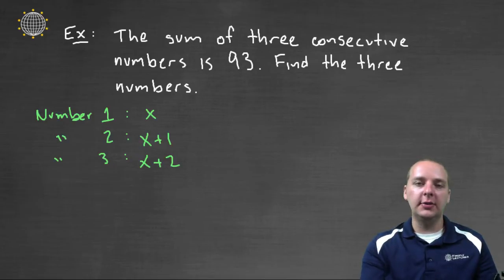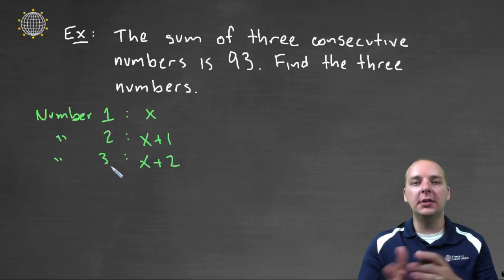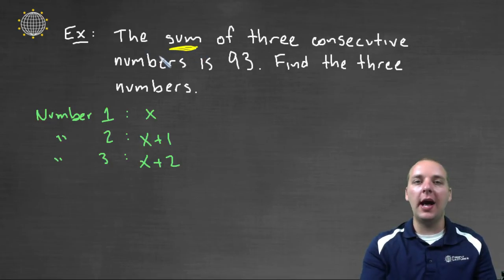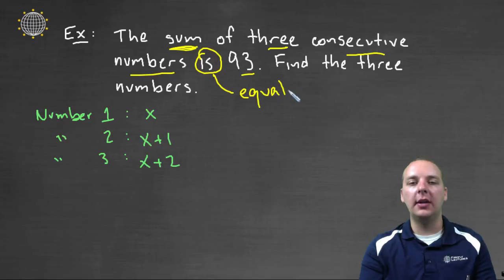All right, so step two. How do I take these variable expressions here, these three expressions for our three numbers, and translate that into an equation that I can solve? Well let me read the sentence again and let's see if we can think about it. It says the sum, okay so there's a sum, we're adding something. The sum of these three consecutive numbers is ninety-three. A math word for is is equals, it equals ninety-three.